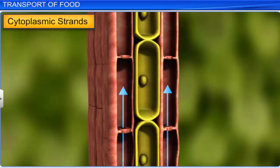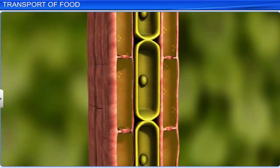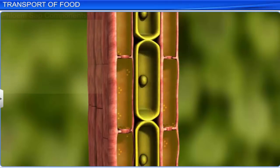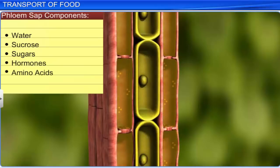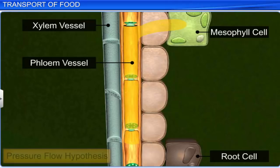However, most of the cellular functions of sieve tube cells inside the phloem are carried out by companion cells. The fluid that passes through these phloem cells is called phloem sap. It is mainly water and sucrose. In addition, they also transport other sugars, hormones, and amino acids from time to time. Phloem sap translocation from source to sink takes place by a mechanism called the pressure flow hypothesis.